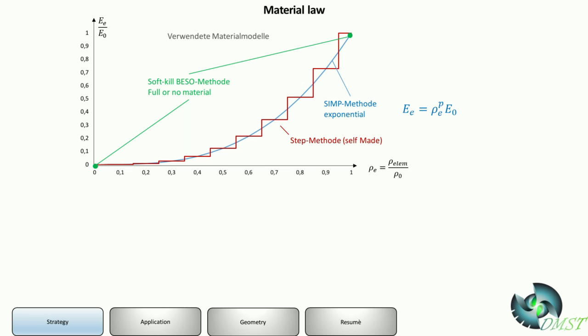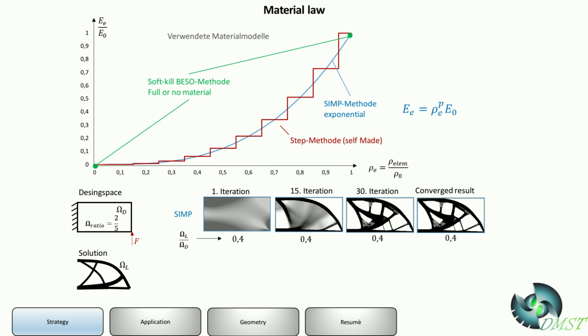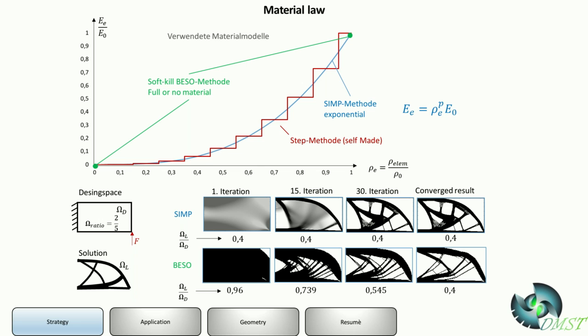On the left hand side you can see the normalized material value, Young's modulus of the element through the Young's modulus of the material. On the bottom, on the x-axis, you can see the normalized density. This is our main example. If you do the SIMP method on this example, in the first iteration we get a density distribution, and after 30-40 iterations we get a converged result.